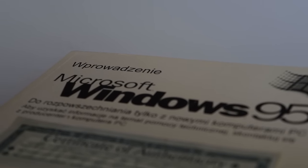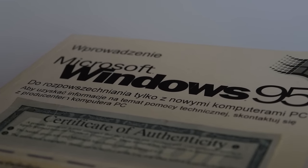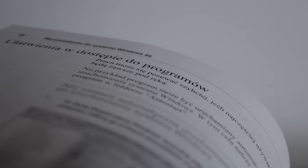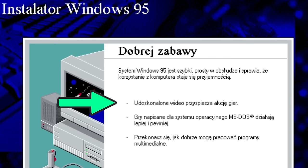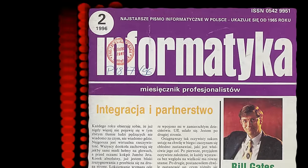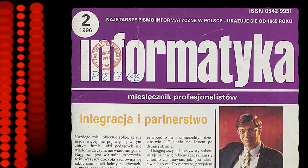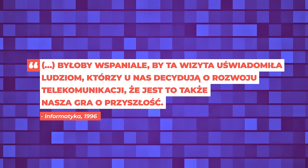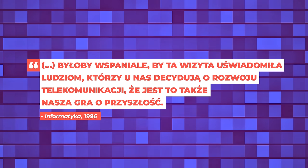Lokalizacja W95 stała na wysokim poziomie — słowo 'raczej' pojawia się tylko dlatego, że nasz język dopiero uczył się IT i osoby tłumaczące musiały improwizować. Z promocją Windowsa do Polski zawitał nawet sam Bill Gates w lutym 1996 roku. Jedna z gazet tak podsumowała wizytę: 'Byłoby wspaniale, by ta wizyta uświadomiła ludziom, którzy u nas decydują o rozwoju telekomunikacji, że jest to także nasza gra o przyszłość.'